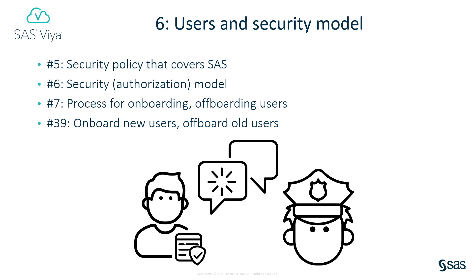Number 6: Users and Security Model. Larger organisations should have a security policy that covers all of their IT systems, including SAS. A SAS Administrator should design an authorisation model that follows this security policy in describing how users are onboarded and off-boarded, where groups are defined, and how their access to content, data, and application functionality is managed. Tasks 5, 6, and 7 in the checklist cover those topics. You should also have a process that ensures you know when users are added or removed from your SAS Viya deployment, so that you can follow your onboarding and off-boarding procedures for those users. Task 39 discusses that.